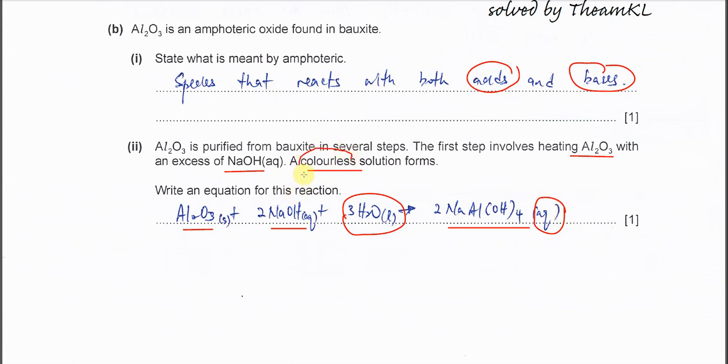This one is soluble in water, that's why it's colorless solution. But in order to form this compound, it must be together with water. Aluminum oxide must react with NaOH and water together. These three form this solution. You have to remember this and balance it.